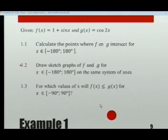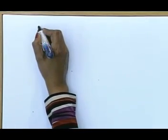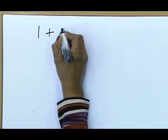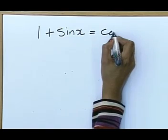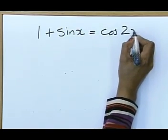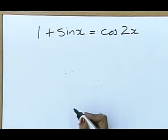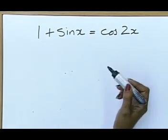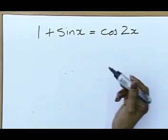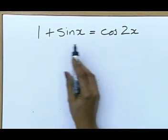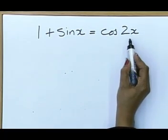We know that when two graphs intersect, the two graphs will be equal to each other. Therefore 1 plus sin x must be equal to cos 2x. The reason you need to show the calculation, because they're asking you to show the calculation. So let's have a look at this. This is fine, but what is this?